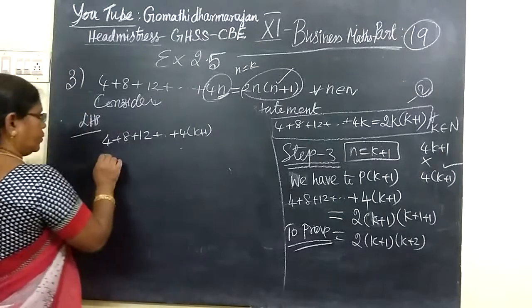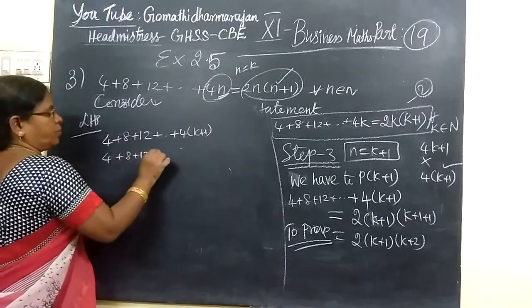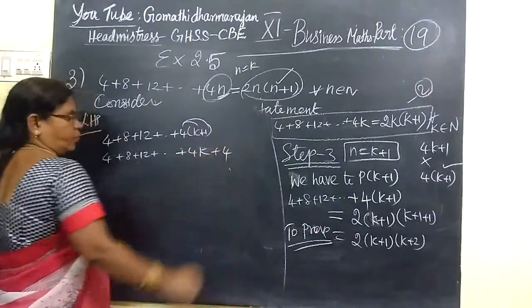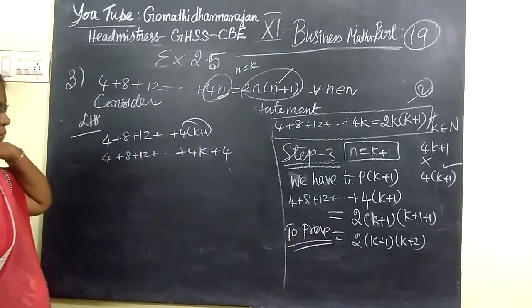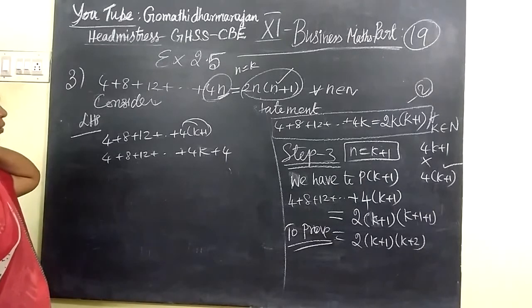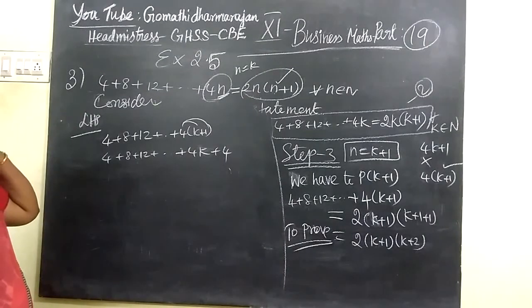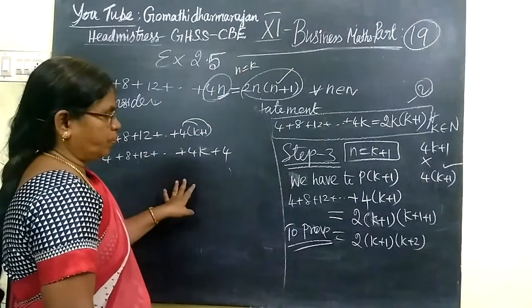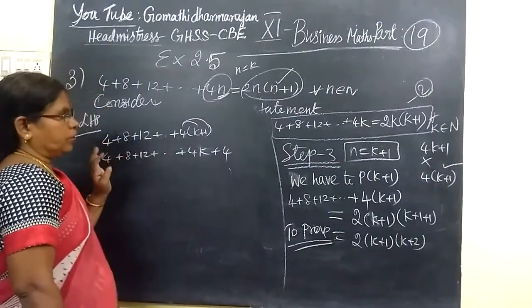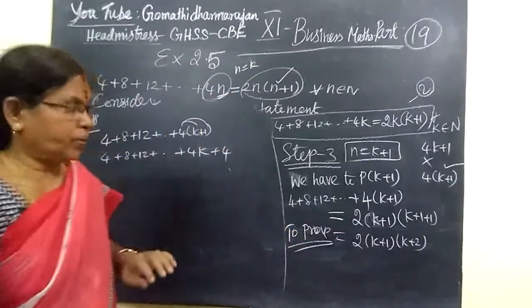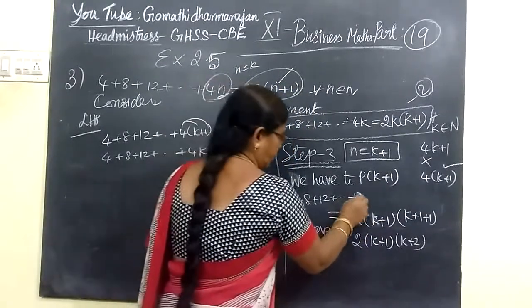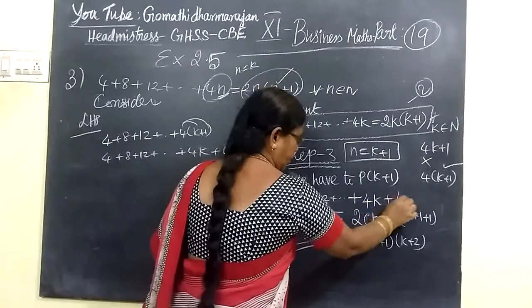So you know 4 bracket K plus 1. So 4 plus 8 plus 12 etcetera plus, take 4 instead, so 4K plus 4. We are writing 4K plus 4. 4 bracket N, 4N, as you think the 4K is K. 4 plus K plus 1. So this is the number A, this is the number 3, and this is the number 4 bracket K plus 1.